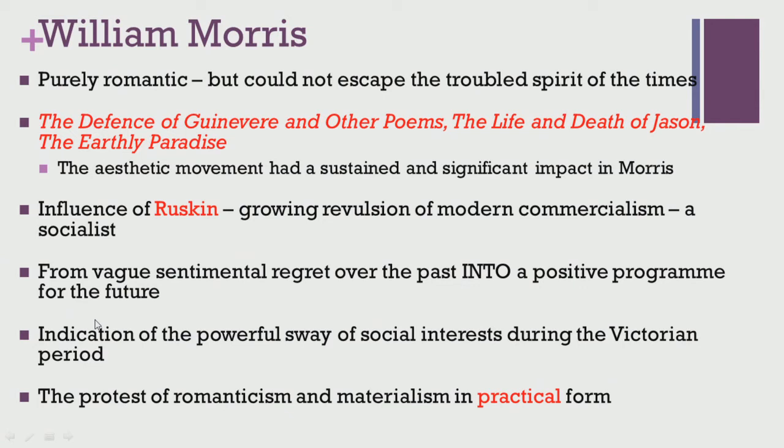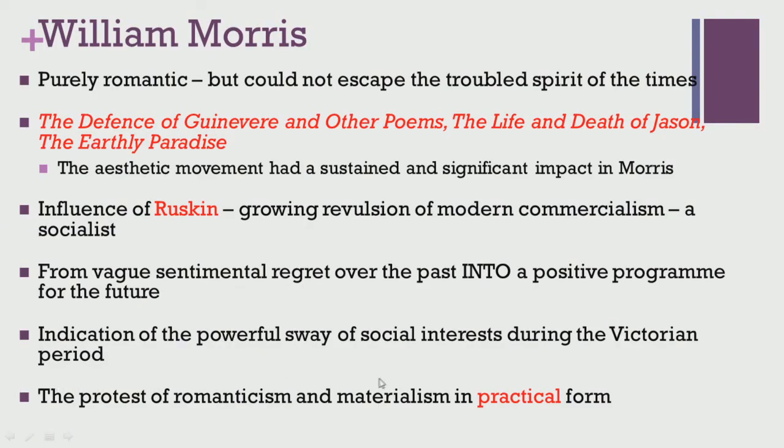Unlike many other Pre-Raphaelite poets, Morris was not able to remain unconcerned about the turn of events dominating the century. We find him moving from a vague sentimental regret over the past into a positive program for the future. He is one of the few Victorian poets who began to realize the importance of hope for the future and practical solutions to come out of despair. In his work we find an indication of the powerful sway of social interest during the Victorian period, and critics say it is only in his work that we find a protest of Romanticism and materialism in a practical form. He also contributed actively to the social and political life in London.